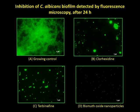The anti-biofilm activity of bismuth oxide nanoparticles was determined by fluorescence microscopy. The results show a high degree of inhibition of biofilm formation by chlorhexidine and terbinafine, as well as bismuth oxide nanoparticles, when compared to control. These results do not change when bismuth oxide nanoparticles were added at different post-inoculation times. This data indicates that bismuth oxide nanoparticles have an anti-biofilm activity as effective as chlorhexidine and terbinafine.